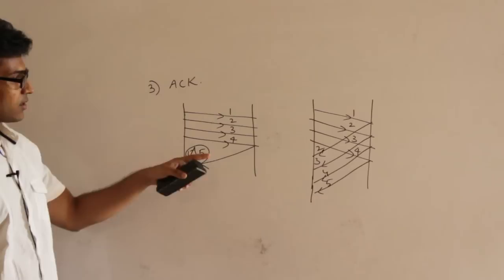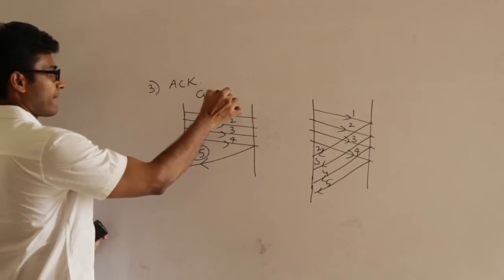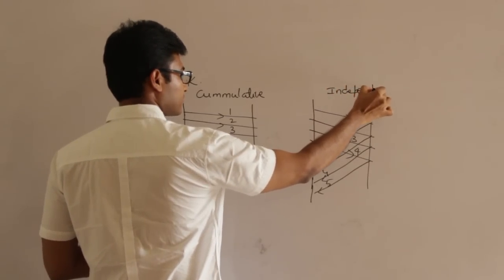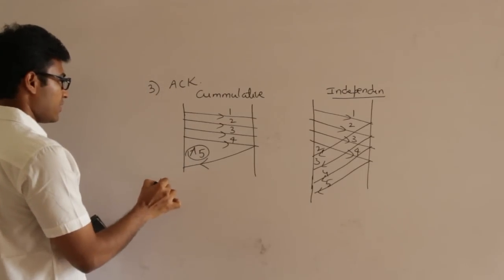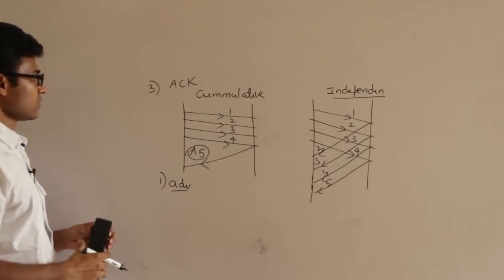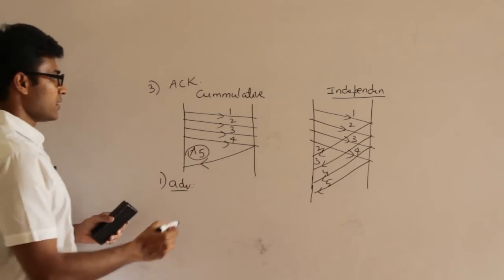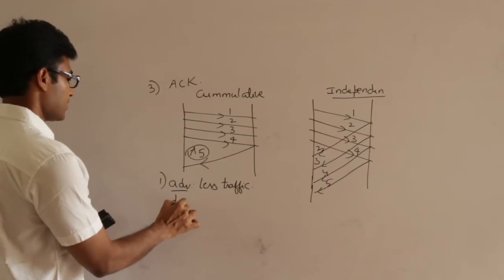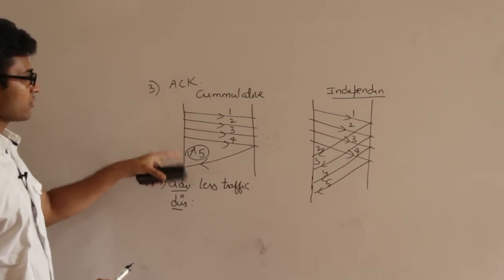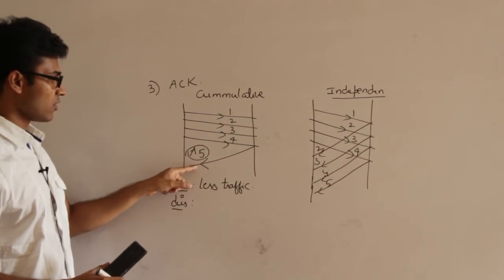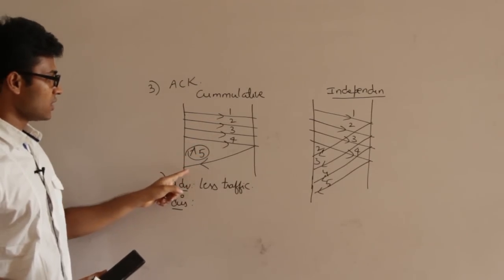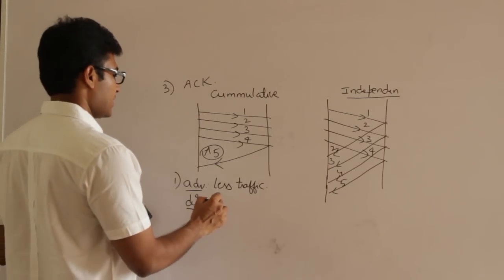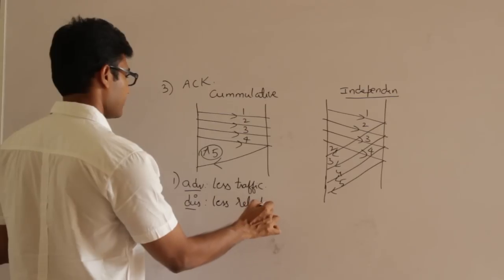Advantage of cumulative acknowledgement: for many packets, we send just one acknowledgement, so traffic is less. Disadvantage: if that one acknowledgement is lost, it means all the packets are considered lost — so reliability is less. Advantage of independent acknowledgement: if one acknowledgement is lost, it only means one packet is lost, so reliability is high. Disadvantage: if you send four packets, you expect four acknowledgements, so traffic is high.